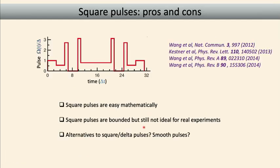This is also an old problem dating back to the 1960s, also from NMR. About 10 years ago it was noticed that some of these techniques from NMR don't apply to many qubit platforms because of physical constraints. For example, in a singlet-triplet spin qubit, you can't make the control field negative and positive arbitrarily. So we developed control sequences using square waveform pulses where we combine a bunch of square pulses to get the target gate while cancelling noise effects.